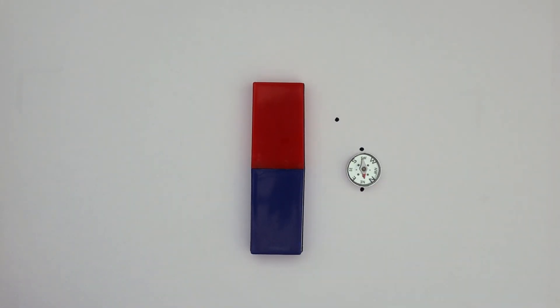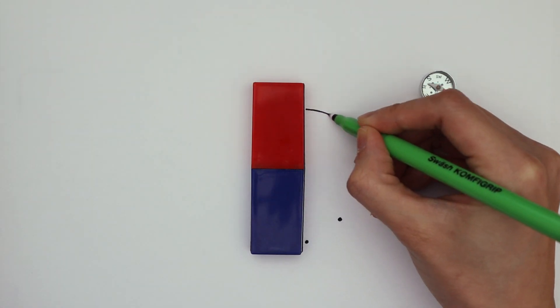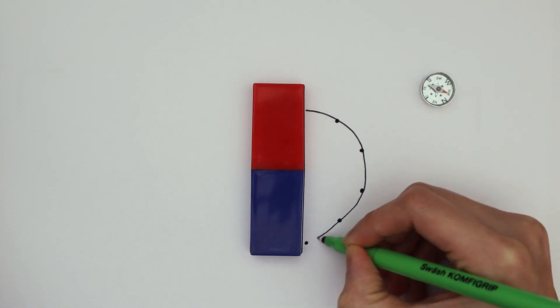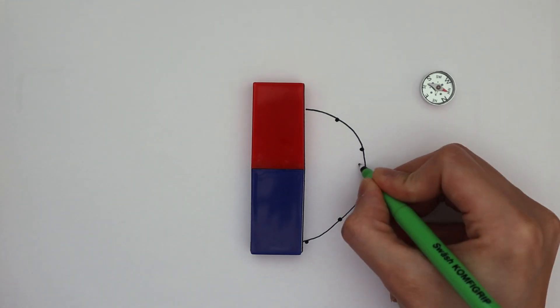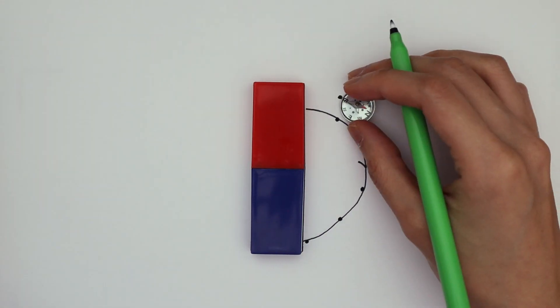Repeat this until you reach the end of the magnet. Join the points together to show a field line. I'll also draw an arrow here to show the direction that the needle is pointing in. I'll do all of the above again with another starting point.